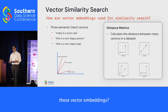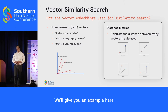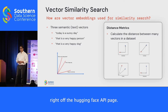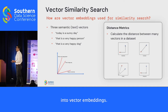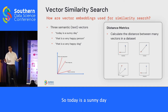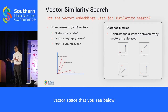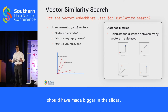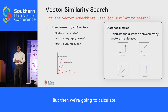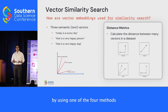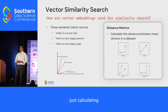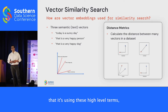How do you actually use these vector embeddings? For similarity search, here's an example ripped from the Hugging Face API page. Three sentences turned into vector embeddings: 'Today is a sunny day,' 'That is a very happy person,' and 'That is a very happy dog.' We project these into a simplified vector space and calculate the distance between those vectors using one of four methods — this example uses cosine similarity.